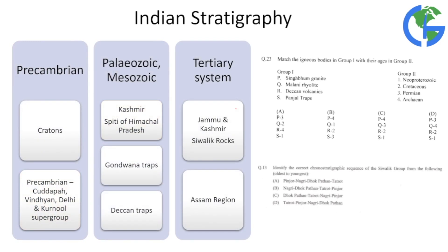Indian stratigraphy is a theoretical topic best divided into three heads. First, Precambrian geology: cratons and Precambrian sediments including Cuddapah, Vindhyan, Curmungal, and Supergroup formations. Second, Paleozoic and Mesozoic: Kashmir, Spiti of Himachal Pradesh, Gondwana traps, and Deccan traps. Third, the Tertiary system: Siwalik, Assam region of the Himalayas, the Eastern Himalayas, and Jammu-Kashmir. Divide stratigraphy into these three parts, make notes, revise, and practice previous year questions with a good test series.